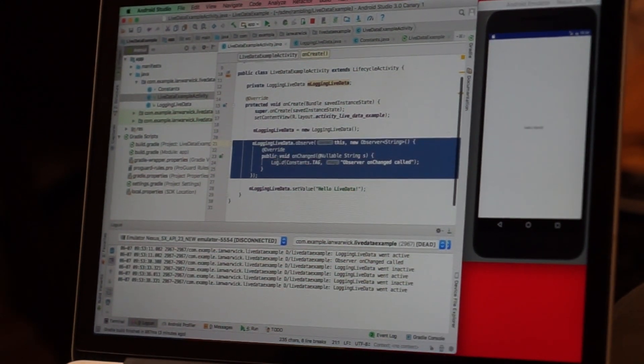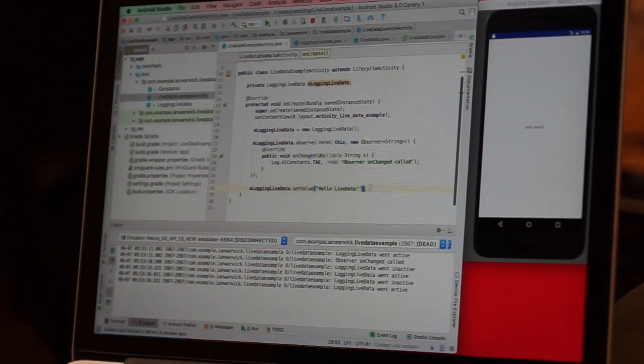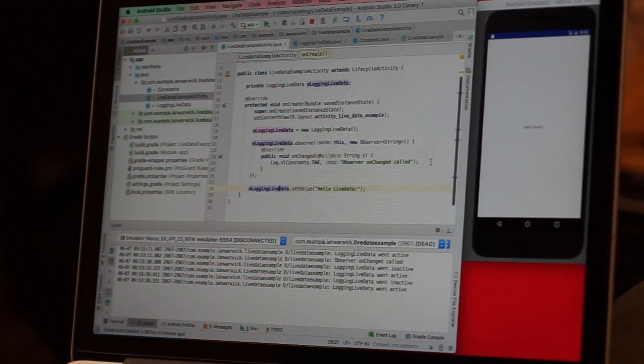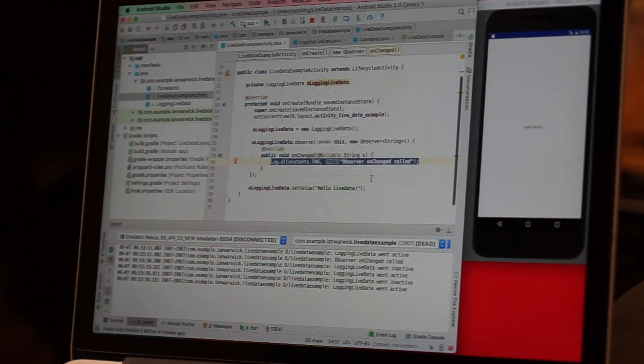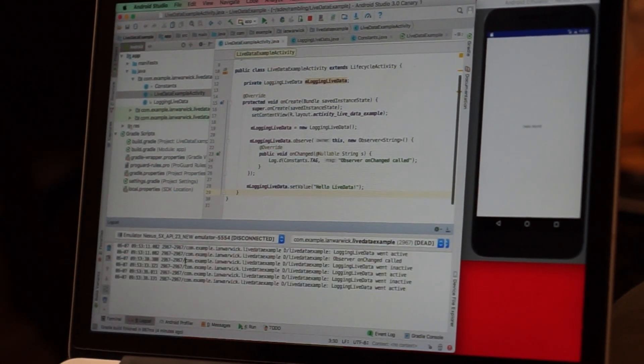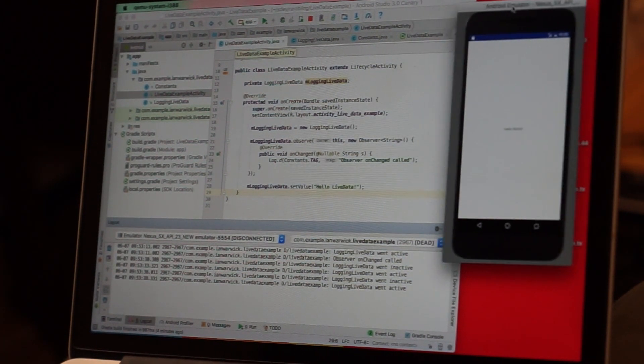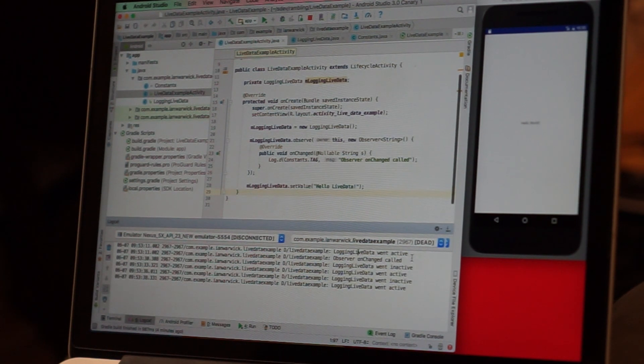Following through the code, I create an instance of logging LiveData and then I observe logging LiveData with this observer. When the value changes, and you can see that the value here is being changed on the next line, so when this value changes all I do is log an observer onChange called event. If we look at the console we can see that this has already been triggered because I have my activity started in this emulator window here.